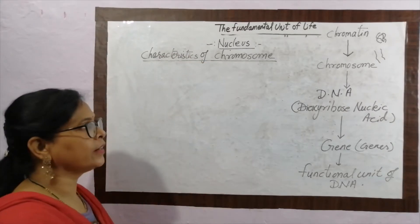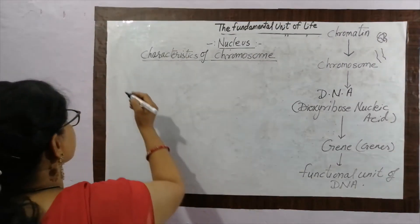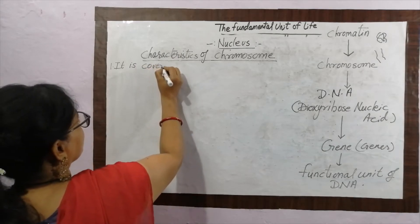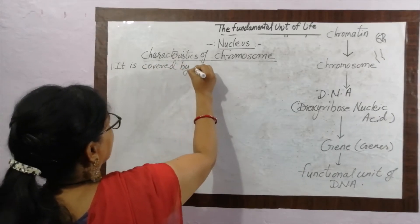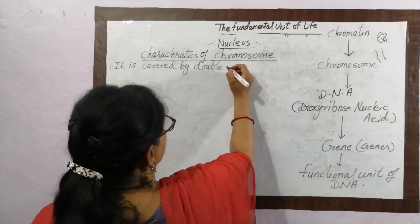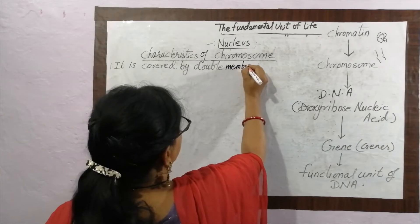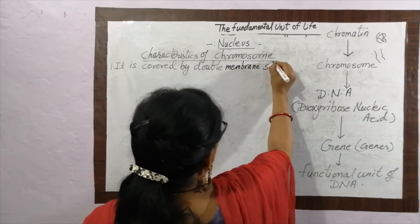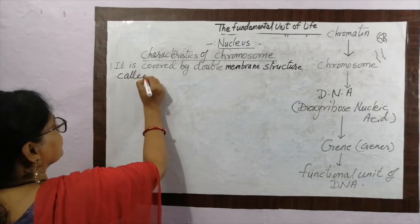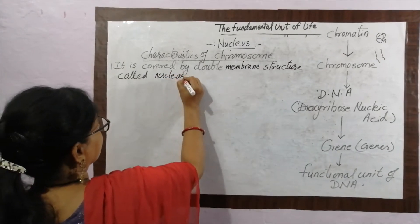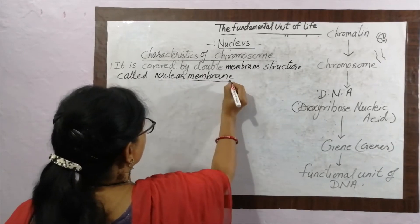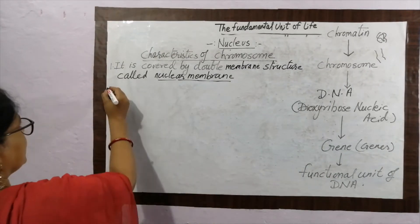Characteristics of the nucleus. What are the characteristics of the nucleus? The first characteristic is that it is covered by a double membrane structure called the nuclear membrane. The role of the nuclear membrane is to protect and to collect all the material inside the nucleus.